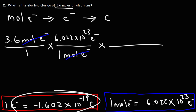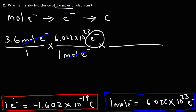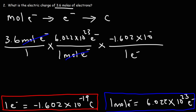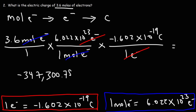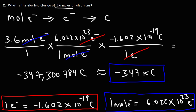We then use the conversion factor to convert from number of electrons to coulombs, placing electrons on the bottom of the third fraction. Those units cancel, and we multiply the numbers on top: 3.6 times 6.022 times 10 to the 23 times negative 1.602 times 10 to the negative 19. You should get negative 347,300.784 coulombs. Rounding and converting to kilocoulombs by dividing by 1,000, that's approximately negative 347 kilocoulombs — the total electric charge of 3.6 moles of electrons.